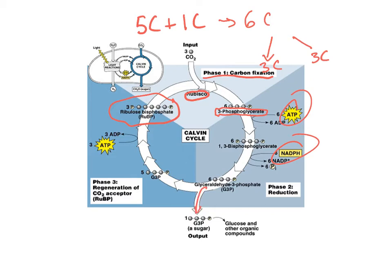At this point, some of the GALP, one in every six, will go off to reform glucose, and then five in every six of those GALP will go off to reform ribulose bisphosphate, also using ATP.